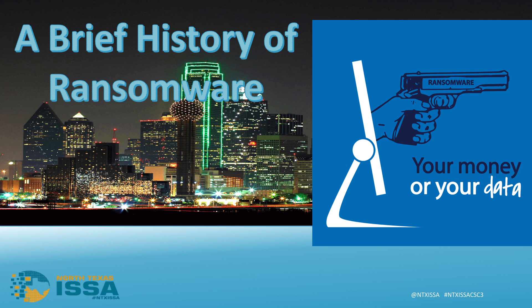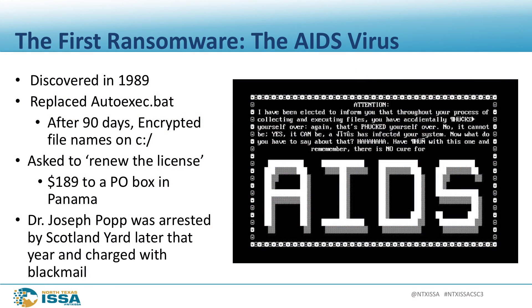Let's talk about the history of ransomware from its humble beginnings to where it is now. Can anybody tell me when the first case of ransomware was? It was actually prior to the internet — 1989, the AIDS virus. A gentleman by the name of Dr. Joseph Popp created a virus that would replace the autoexec.bat, and after 90 days it would encrypt the files on the C drive. You were asked to renew the license and send a check to a P.O. box in Panama. He was arrested by Scotland Yard, served two years in prison, charged with blackmail. His defense was that the money was going to AIDS research, but nobody bought it.